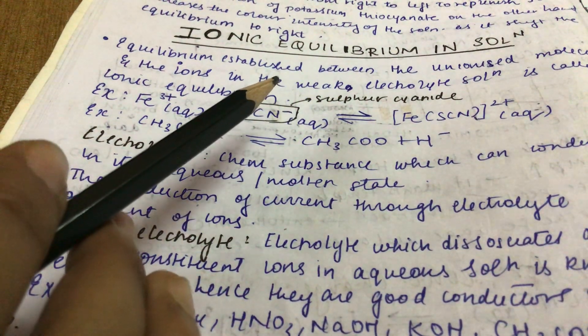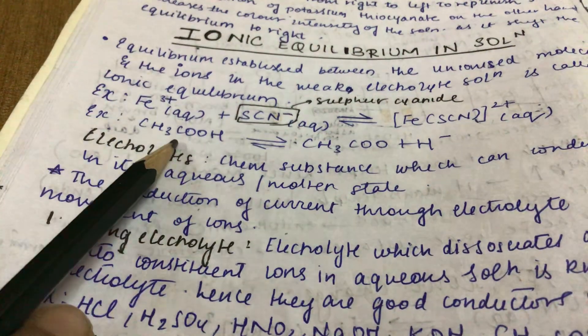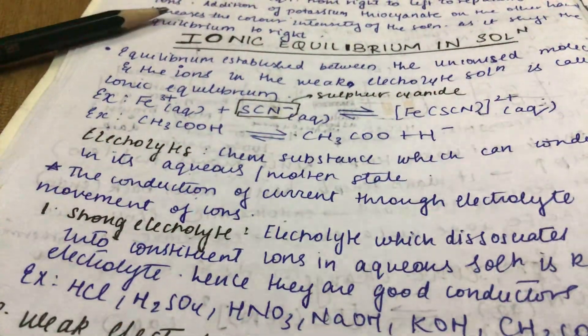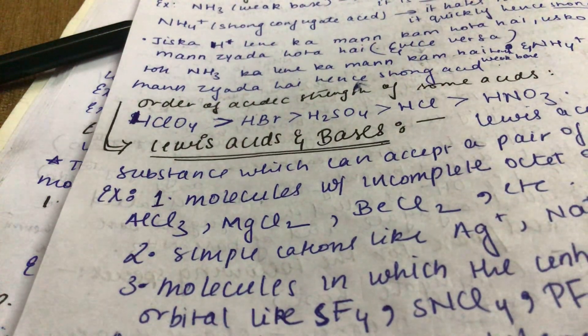Fe3+ aqueous plus sulfur cyanide negative gives FeSCN2+. CH3COOH gives CH3COO minus plus H minus. There is now the acid-base concept of ionization of acids and bases.